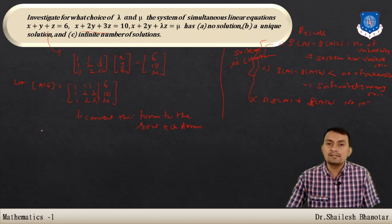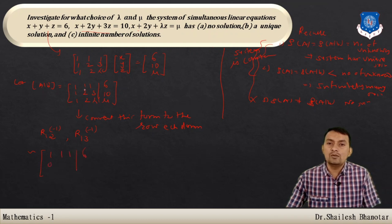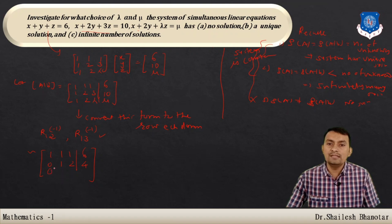Apply the first operation: multiply row 1 by −1 and add to row 2, and also multiply row 1 by −1 and add to row 3. We get the equivalent matrix: [1, 1, 1 | 6], [0, 1, 2 | 4], [0, 1, λ−1 | μ−6].